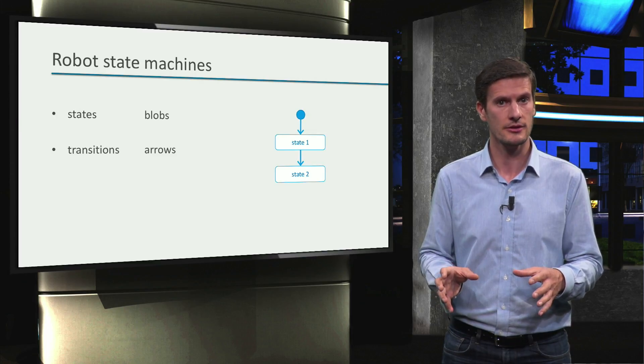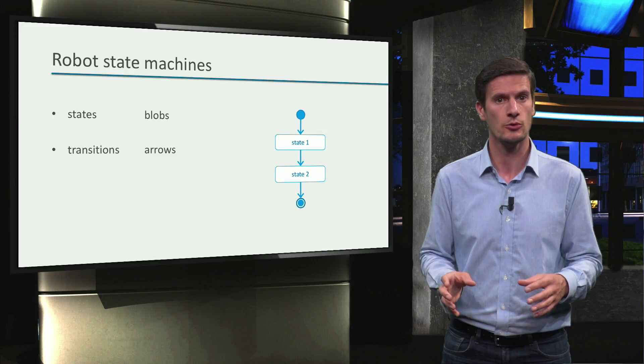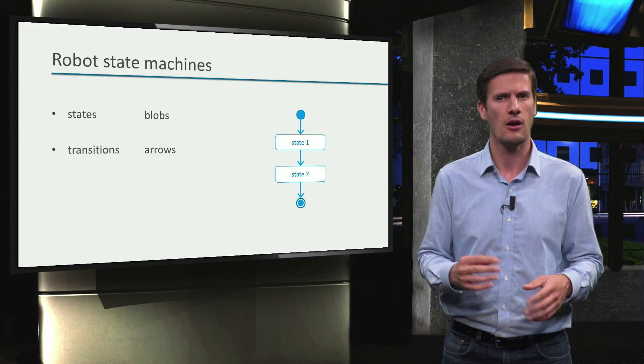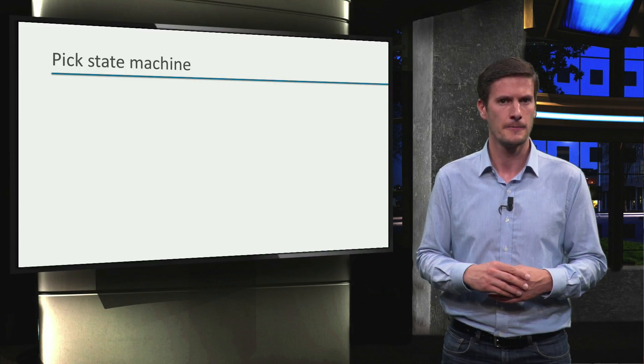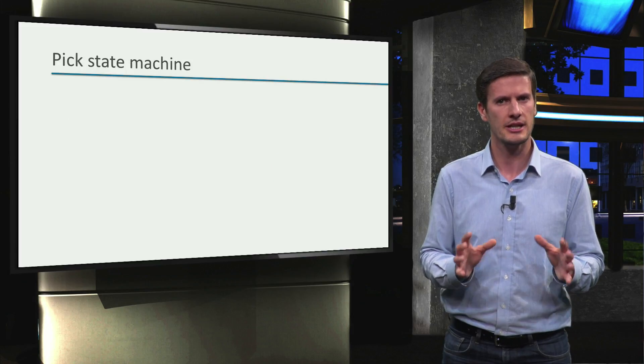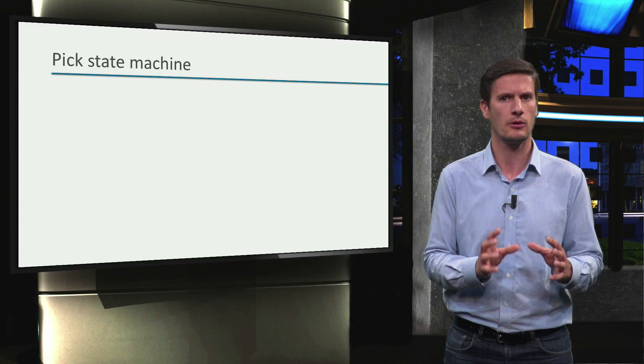The end of a behavior execution is represented with a transition to a double circle, and other symbols are also used, such as a circle with a cross.